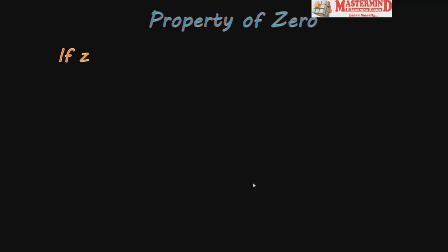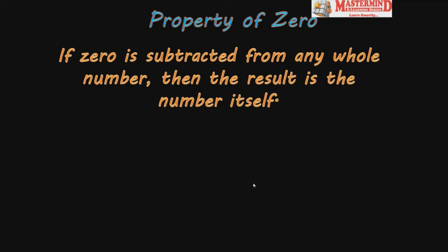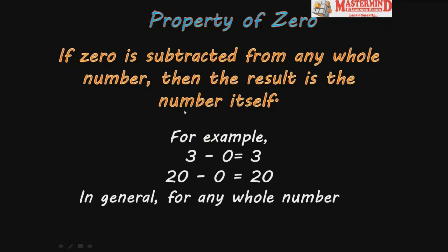One more important property is the property of zero in subtraction. If zero is subtracted from any whole number, the result is always the number itself. For example, three minus zero is three, and twenty minus zero is twenty. In general, for any whole number a: a minus zero equals a. This is known as the property of zero.